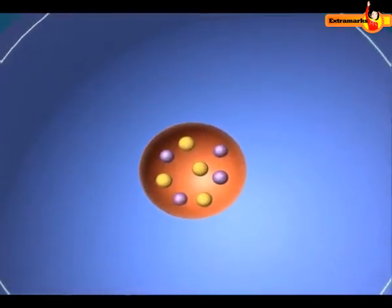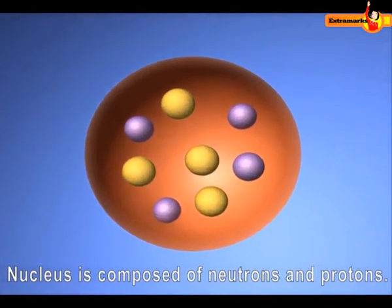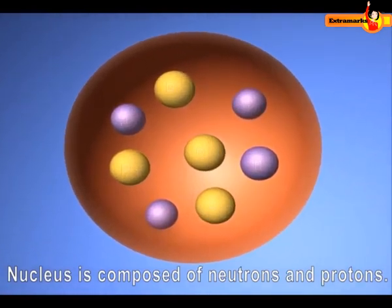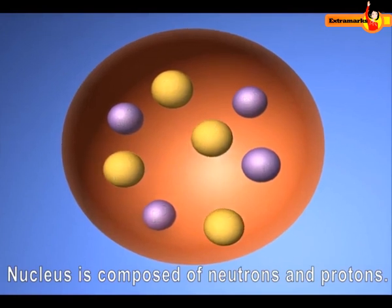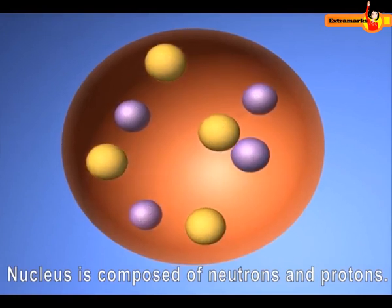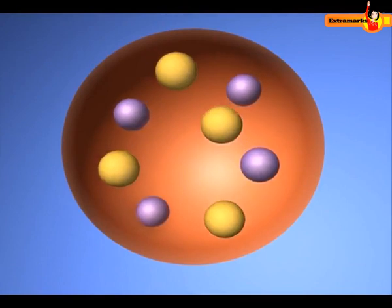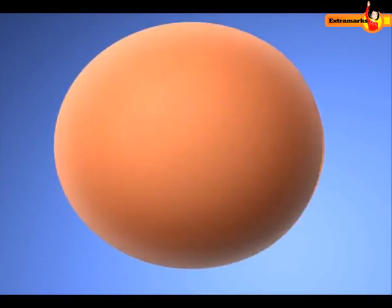The nucleus is composed of chargeless neutrons and positively charged protons. There is a force of repulsion between the protons due to the same charge on them. But still the nucleus does not break. Can you think why?